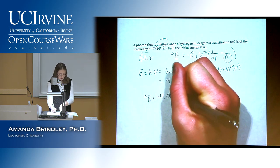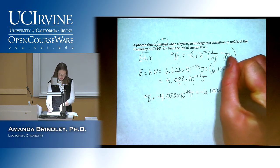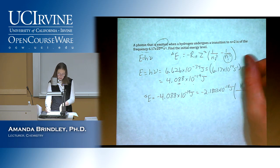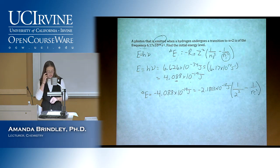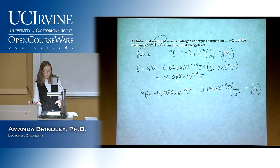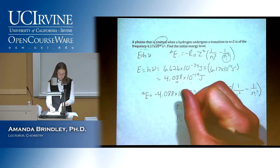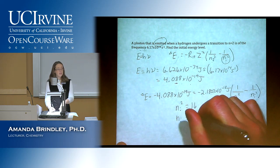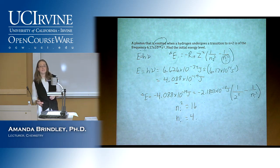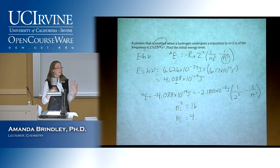That sign issue is one of the main reasons people get these questions wrong on exams. We fill in the final energy level of 2, don't forget to square it, and solve the algebra to get NI equals 4. That means it went from n equals 4 down to n equals 2. Note that energy levels must be integers — if you get 3.98, round to 4.